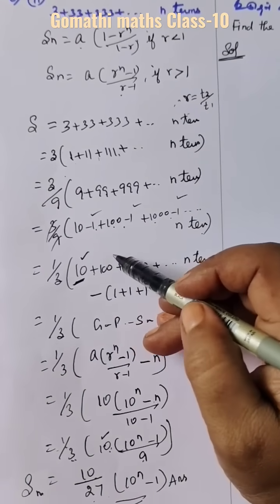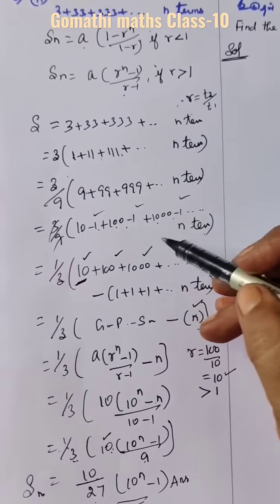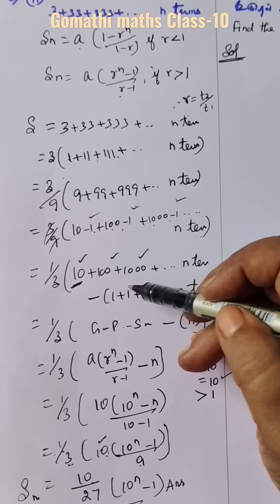You collect all the 10, 100, 1000 etc. Then this minus 1, minus 1, minus 1.